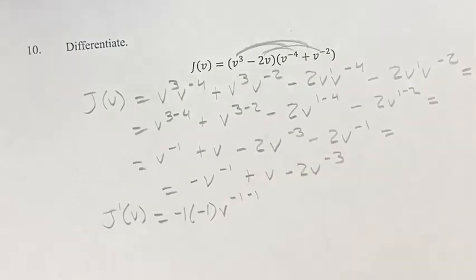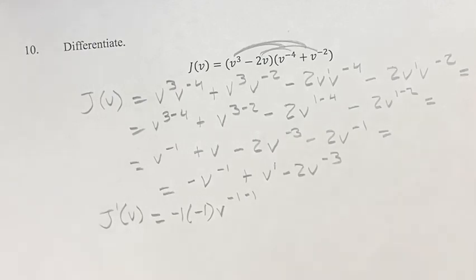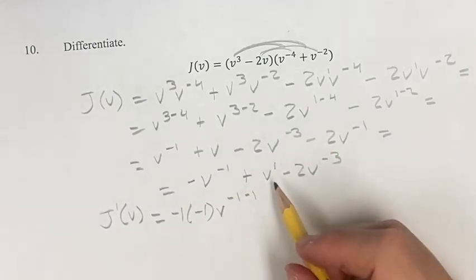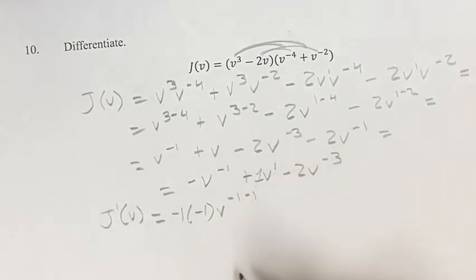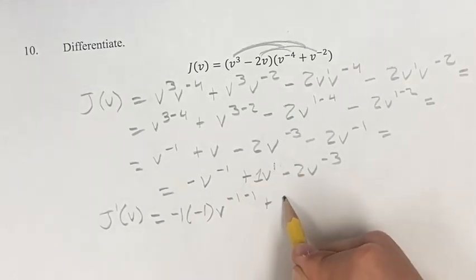We have a linear term here. We could go through the power rule, since this is just v to the first power. But if you ever have a term with it's just the first power, you can say, okay, we have the coefficient of 1 here, since plus v is the same as plus 1v. Coefficient is just going to be the derivative, so this is plus 1.